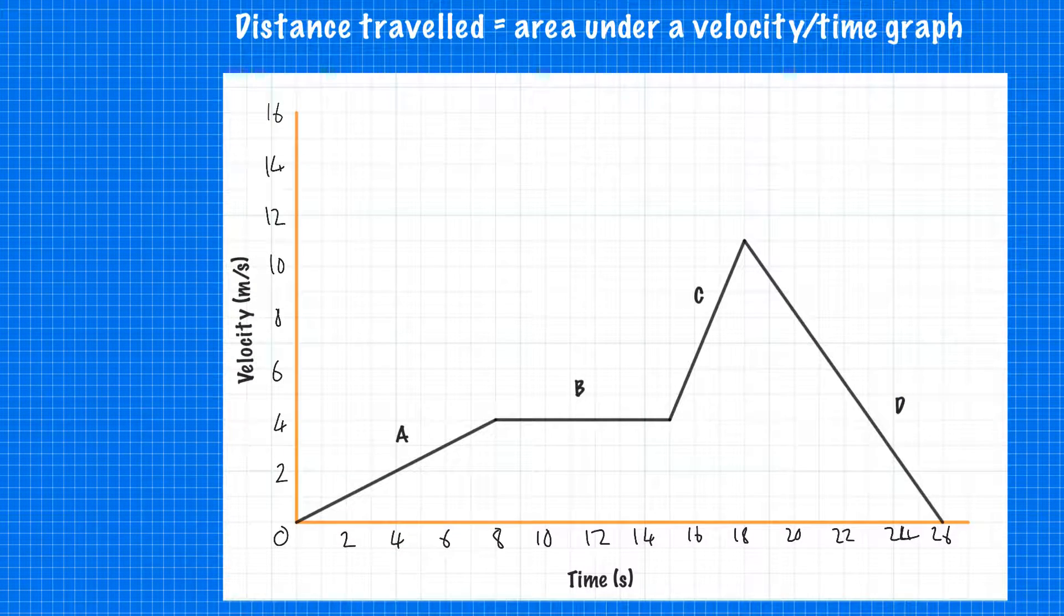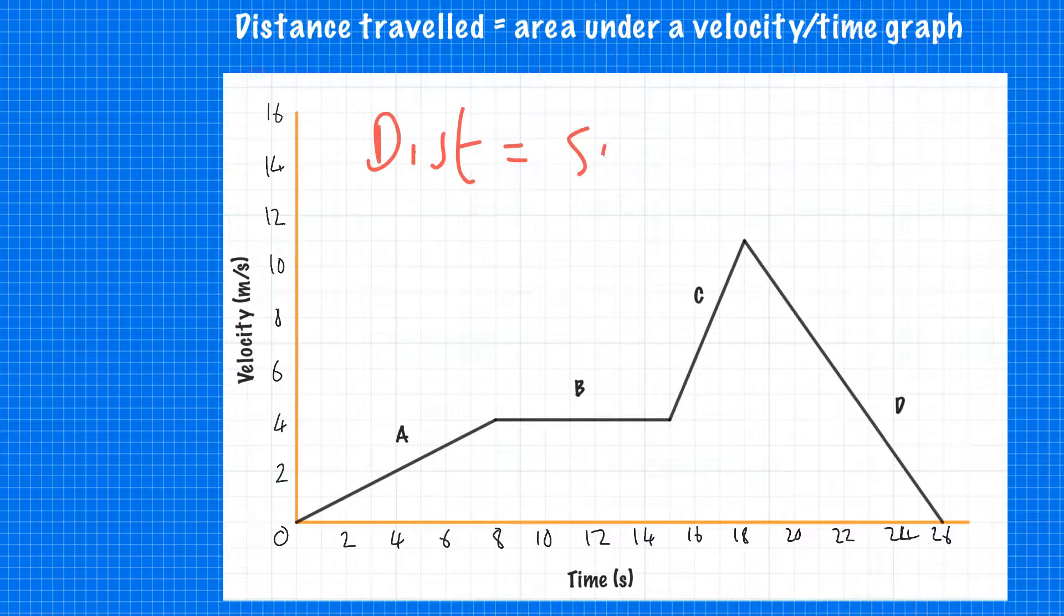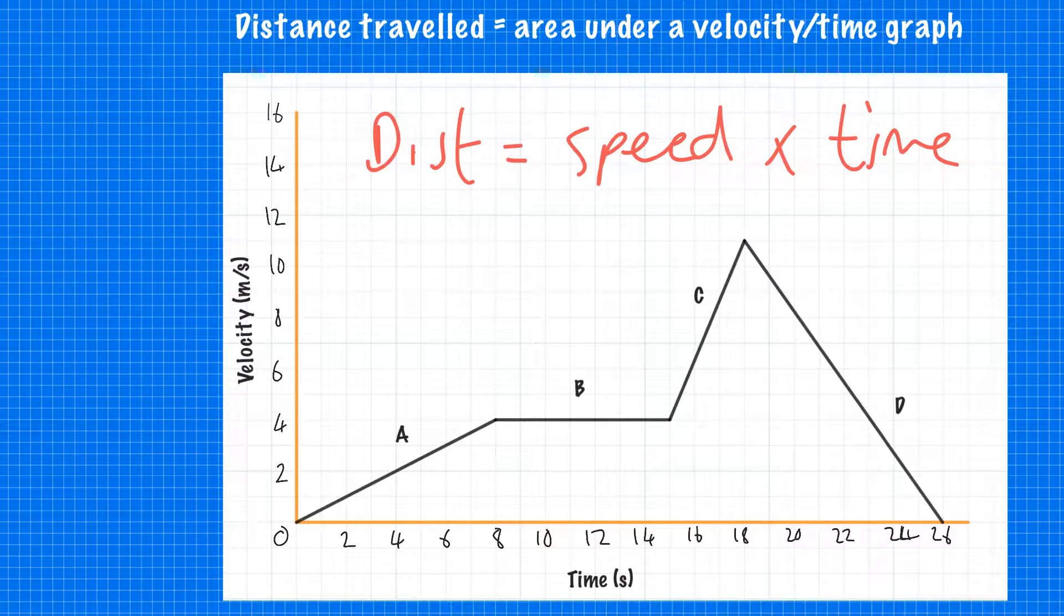Next, we're going to look at how we calculate the distance traveled by the object on a velocity-time graph. We calculate the distance by working out the area. It makes sense because distance equals speed times time.